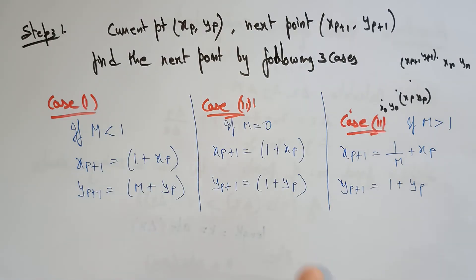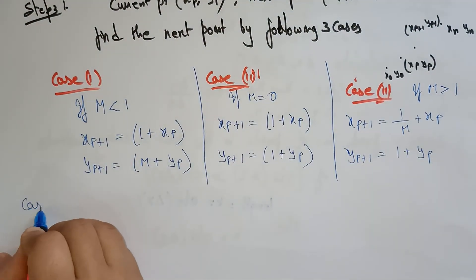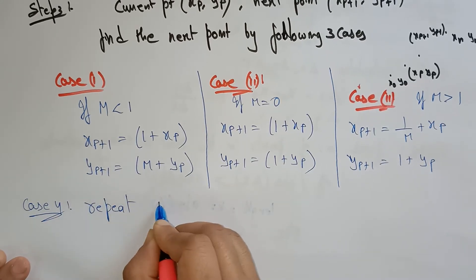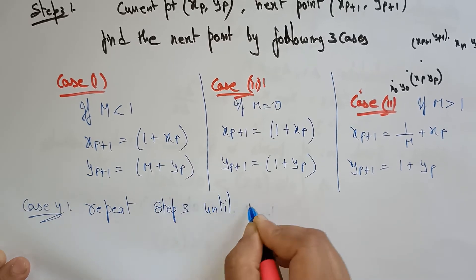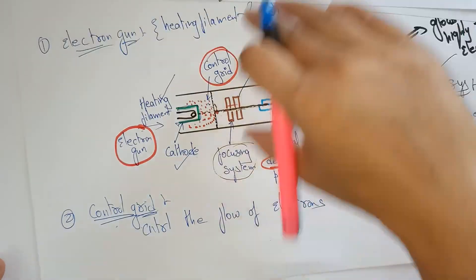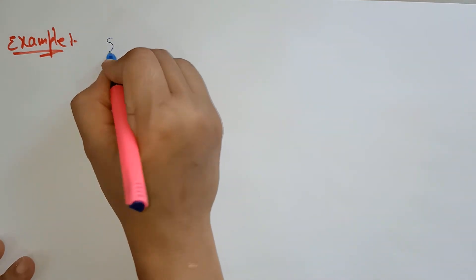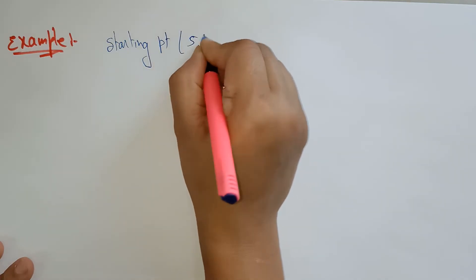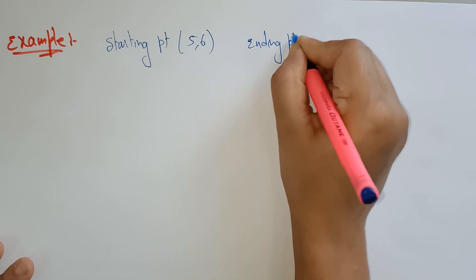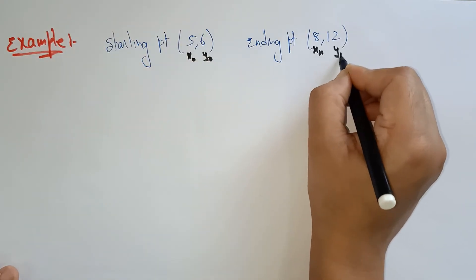Step 4: Repeat step 3 until the end point is reached. Now let's apply this with an example. The starting point is (5, 6) — that's x-naught, y-naught — and the ending point is (8, 12) — that's xn, yn.